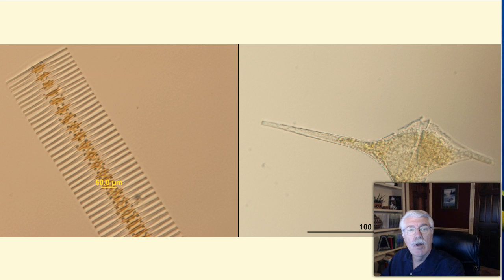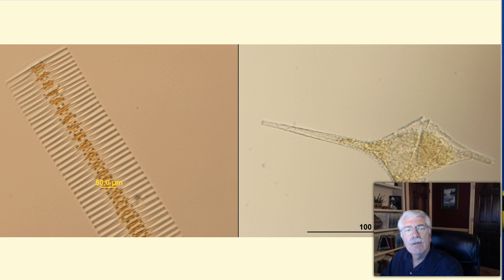Another group, called diatoms, are a type of algae encased within a cell of interlocking parts made of silica, and they can form colonies.